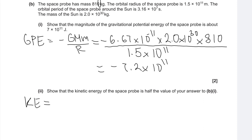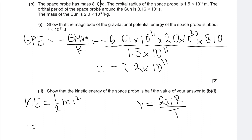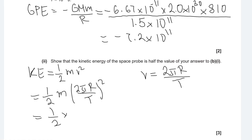There are a couple of different ways to approach that. Kinetic energy, sticking to the fundamentals, is just ½mv². To find the speed v, since we're given the orbital radius and the orbital period, we can use v = 2πR divided by T. So KE = ½m × (2πR/T)².